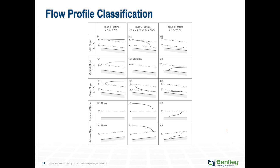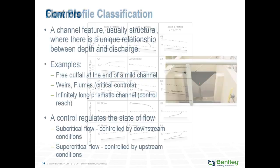Sometimes you might wish to know the flow profile classification. You actually see this when you look at the profile of your pipes, which we'll do many times in this class. There's a chart that shows us the different types of flow profiles we can have — mild slope, critical slope, steep slope, adverse slope, etc. If you would like to get this reported for each of your pipes, you can do that in the tabular reports.